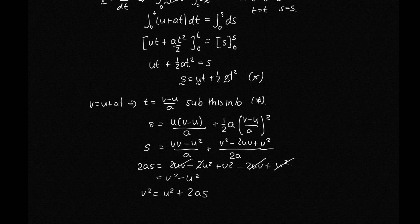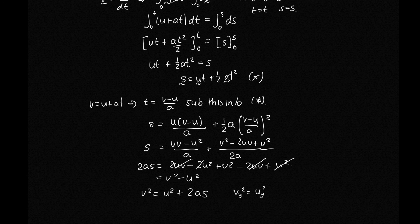We won't write this one as vectors because we haven't covered vector multiplication yet, so it's not clear what multiplying two vectors together means. We'll write it as a one-dimensional case. In three dimensions, it holds in each direction separately — for example, in the y-direction: vy² = uy² + 2ay·sy, and similarly vx² = ux² + 2ax·sx.